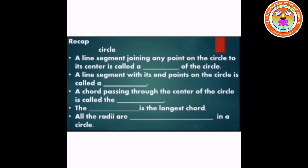The first property: a line segment joining any point on the circle to its center is called a radius of the circle.